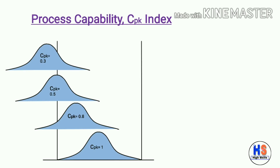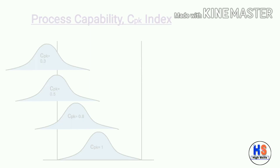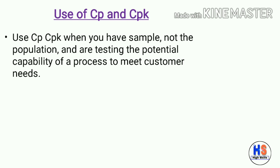Lesser the value of CPK, more the process is shifted from the center. The value of CP may remain the same while CPK is different. An important point to note: the value of CPK cannot be greater than the value of CP — it will be equal to or less than CP.